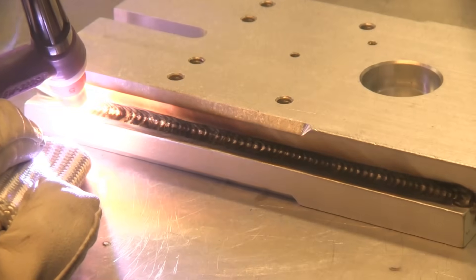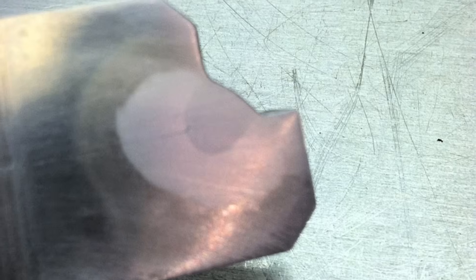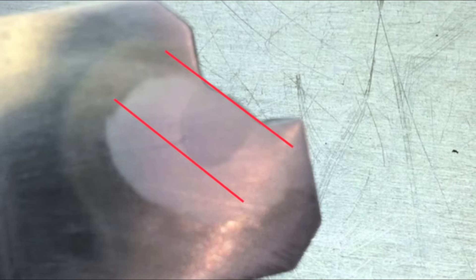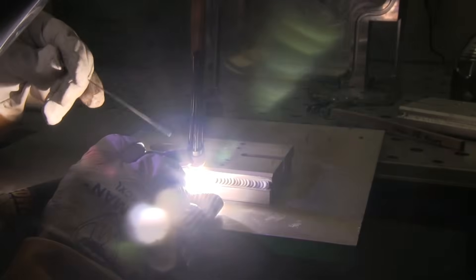Here's what I mean by tight arc. That's tighter than you would ever have it using AC on aluminum. And the travel speed is a whole lot quicker, and the penetration, as you see right there, way deeper. Penetration is almost as deep or deeper as the weld is wide.